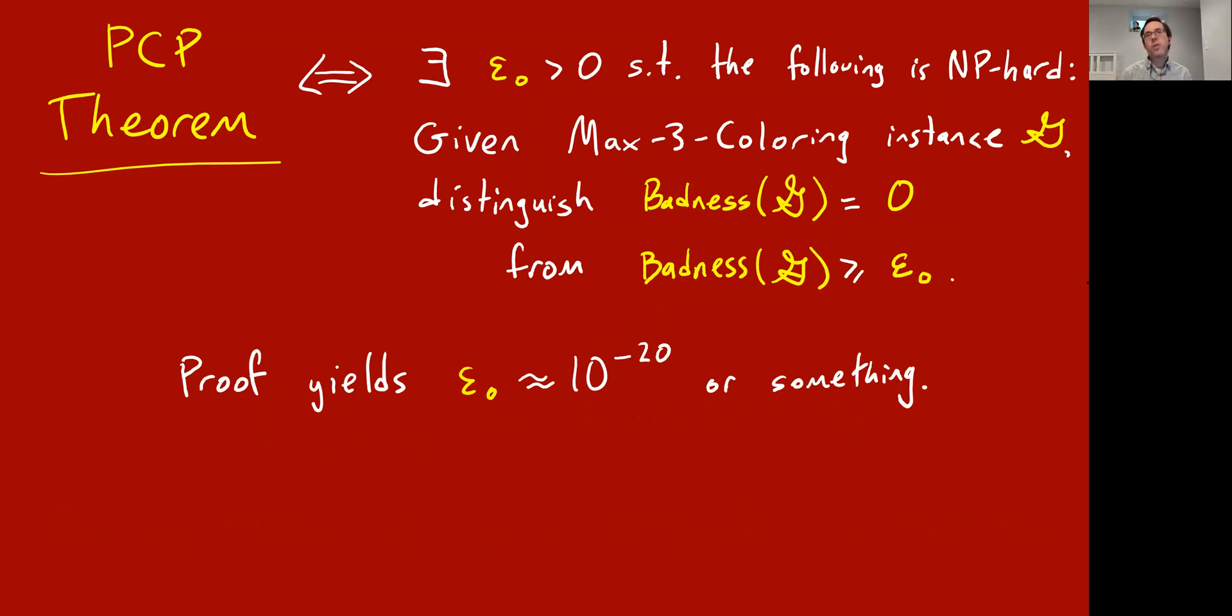The proof that I'm going to sketch for you actually yields a very pathetic constant. I'm not even going to work through the numbers, but it might give you something like 10 to the minus 20, which is horrible, but the point is, it's like a universal constant independent of n, the size of the graph. In case you're curious, the best-known epsilon naught that is proved these days is any number less than one-seventeenth. I want to think of it like five percent. Zero versus five percent is now known to be NP-hard. That's a result proven by Austrin, Tan, Wright, and Yars-Truhli in 2012. But let's not worry about the constant too much, but just think of it as a fixed constant in your head.